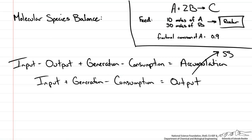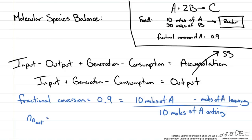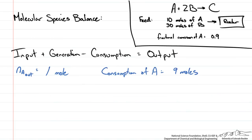For this approach we are left with output as the variable of interest. The first thing we can do from our reactor setup is use the fractional conversion of A equal to 0.9 to determine the moles of A leaving. Recall that fractional conversion is the moles of A entering minus moles of A leaving, all over moles of A entering. With 10 moles of A entering, we calculate NA out as 1 mole.